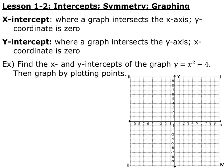Lesson 1.2 is intercepts, symmetry, and graphing. So a little review: x-intercepts is where your graph crosses the x-axis and where the y-coordinate is equal to 0. Y-intercepts is where a graph intersects the y-axis, where the x-coordinate is equal to 0.